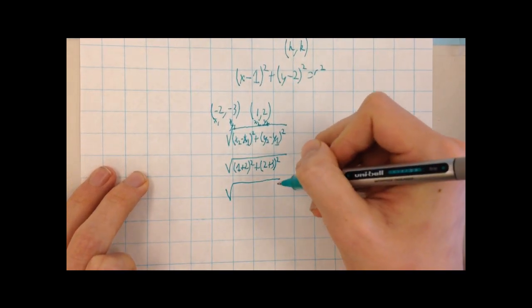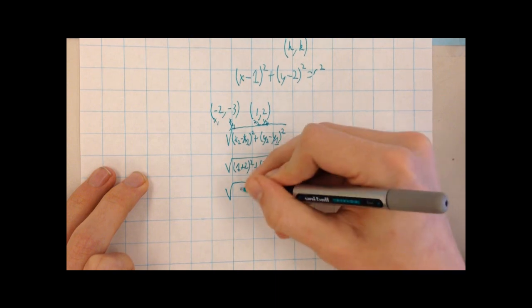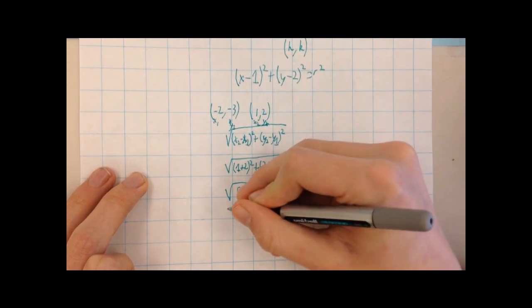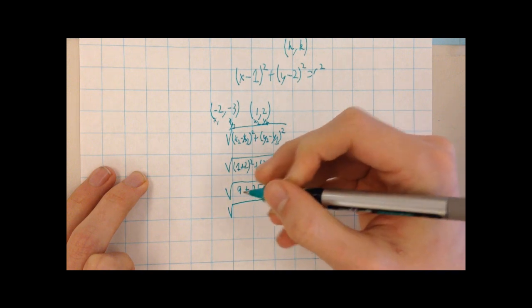So we have the square root of 3 squared, which is 9, plus 5 squared, which is 25, which becomes the square root of 34.